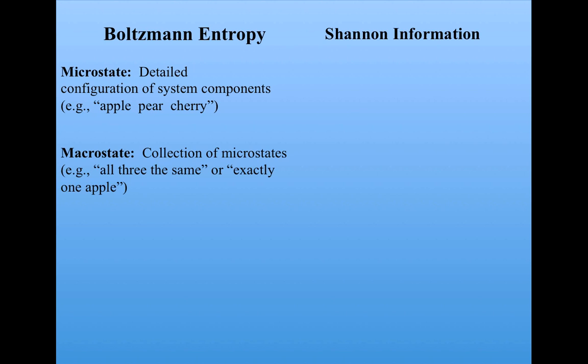Shannon got his idea for characterizing information from the statistical mechanics of Boltzmann. Recall that we defined the notion of a microstate as some detailed configuration of the system components. In the example of a slot machine, that would be one configuration of the slot machine windows, such as apple, pear, cherry. And a macrostate was some collection or set of microstates, such as all three the same or exactly one apple.